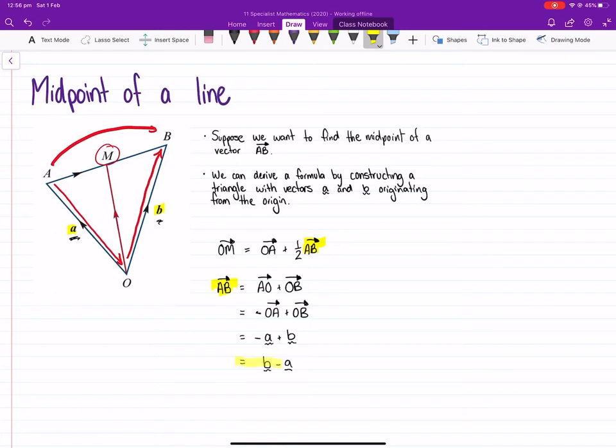And so now we can substitute this solution, vector AB equals B minus A, into the original equation. And we get OM, so this is the continuation of this equation, we get vector OM is equal to vector OA. In fact, instead of writing vector OA, I'm just going to use the term A again. We get vector A and we're going to add on half of vector AB, and we established that vector AB was B minus A.